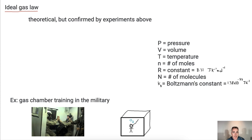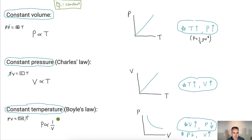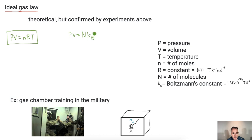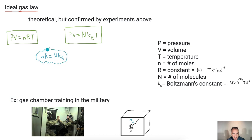Now we can write the ideal gas equation: PV equals n times R times T. There's also another version: PV equals N times k_B times T. Notice we still have PV equals something times T, so nR must be the same thing as capital N times k_B.